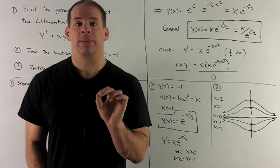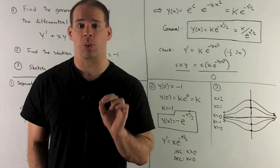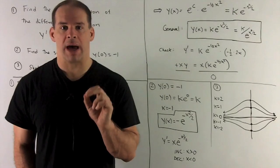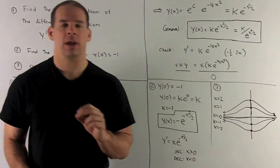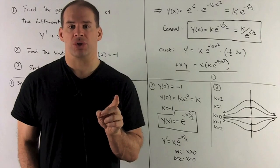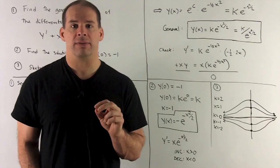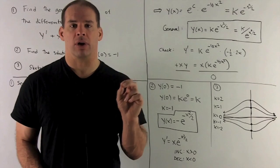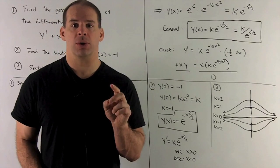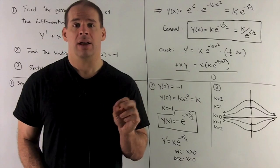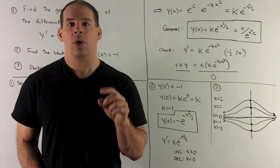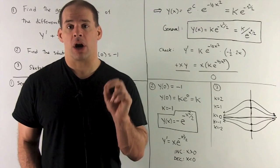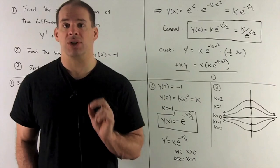Let's sketch this, which will help us get the sketch of all solutions in the xy plane. Without taking a derivative, we know y of zero is minus one, so we mark that point. Taking the limit as x goes to plus or minus infinity: minus e to the minus x squared over two equals minus one over e to the x squared over two, and since e to the x squared over two grows without bound in both directions, the function approaches zero. So there is a horizontal asymptote along the x-axis on both sides of the graph.